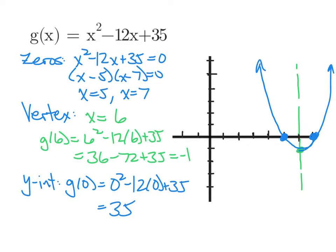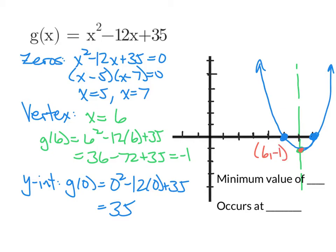Graphing a parabola is something you already know about, but I want to talk about the term extrema — the extremes of a graph, either maximums or minimums. For this parabola, it does have a minimum value, which is the value at the lowest point. The ordered pair is (6, -1), so the minimum value is negative 1 and it occurs at x equals 6. The x-coordinate tells us where something happens; the y-coordinate tells us the value. This curve has no maximum because it's unbounded on top — it goes up forever.